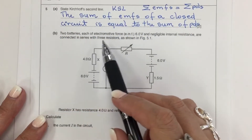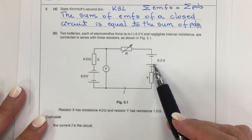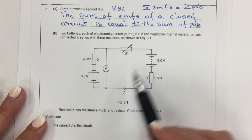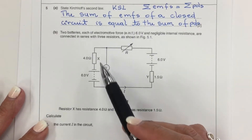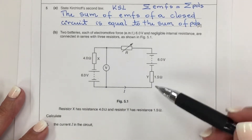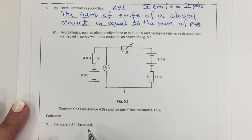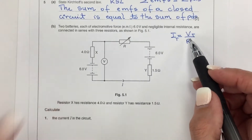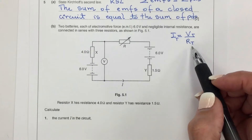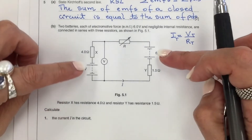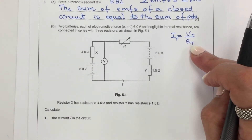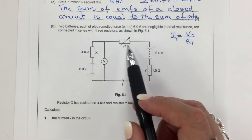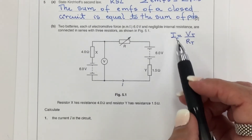Two batteries, each of EMF 6 volts and negligible internal resistance, are connected in series with three resistors as shown. Resistor X has resistance 4 ohms and resistor Y has resistance 1.5 ohms. To calculate the current, I need the total resistance, but the value of R is unknown, so I cannot calculate the current through this method directly.